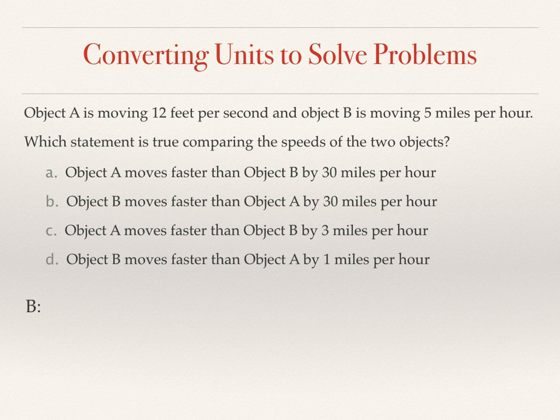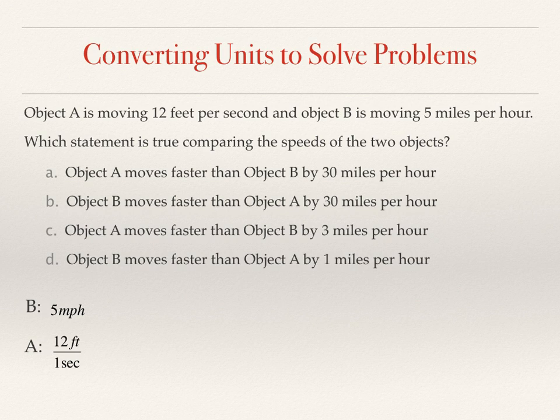The best way to compare speeds is to use the same units. I'm more comfortable with miles per hour, so Object B is already given as 5 miles per hour. Object A is given as 12 feet per second, and I want to convert this to miles per hour. I know there are 60 seconds in one minute, so I can use that as a conversion factor. When the same units appear in the numerator and denominator, they cancel out.